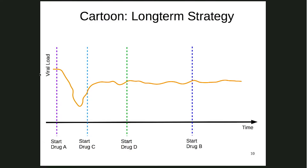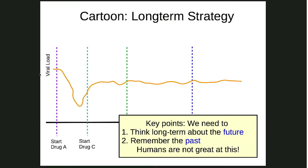In contrast, if you happen to know that drug B causes resistance to many other drugs, you might try a different strategy that reorders the drugs and settles for a slightly different viral load that's still below some acceptable threshold. This is why you need to think long-term in HIV treatment.